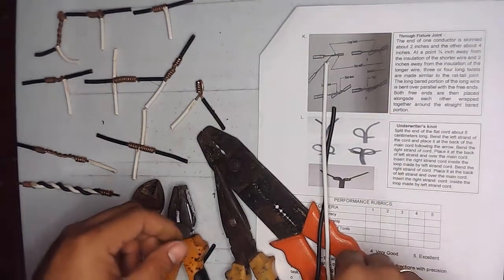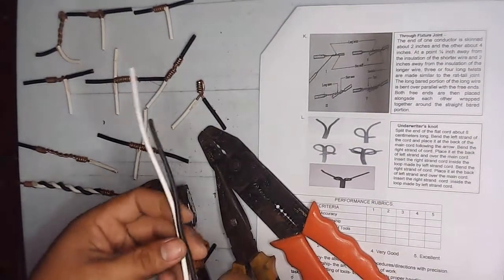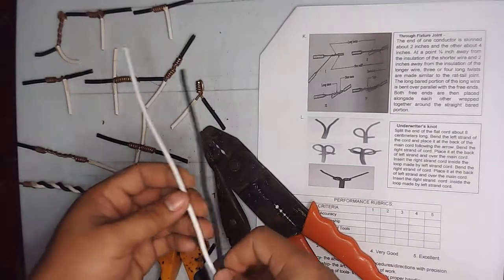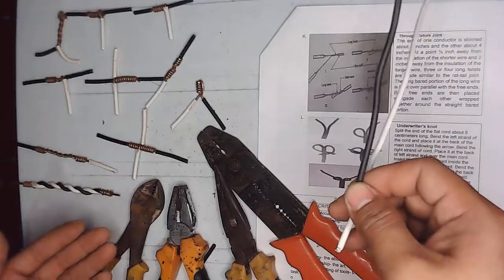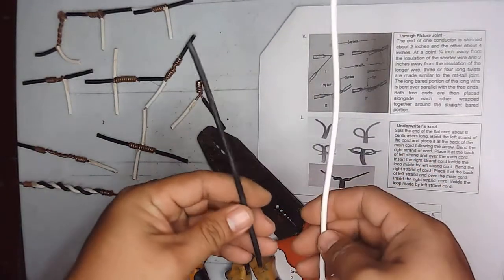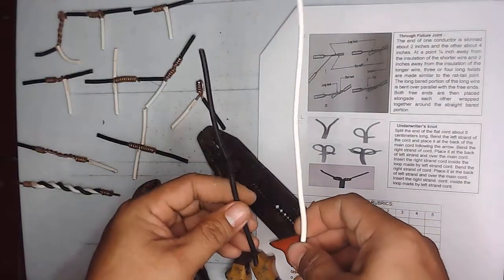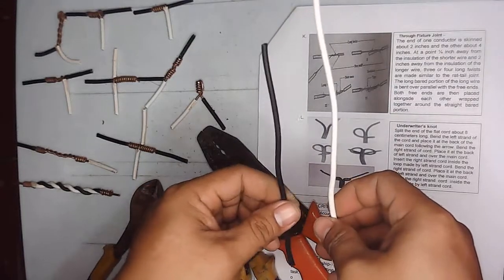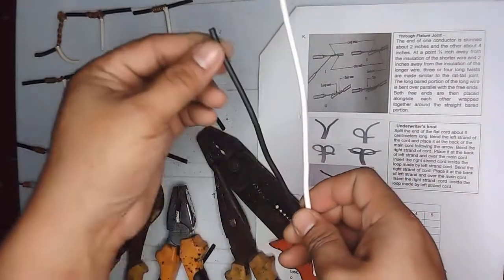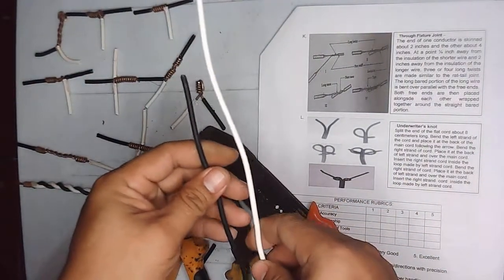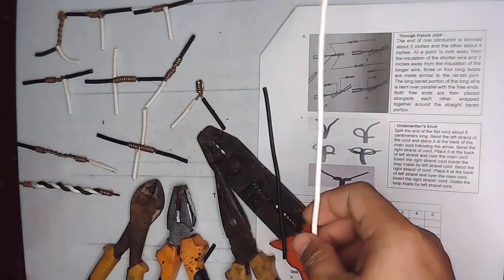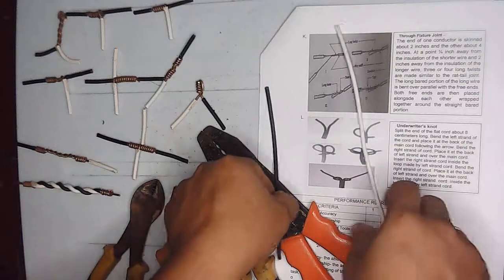Okay, so the last wire splice we'll make is the fixture joint. The fixture joint can use these four tools, and for the materials we use two wires. As you can see, they have different sizes. The white is longer than the black since we will strip the wire in different sizes.